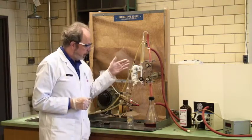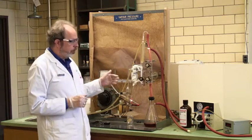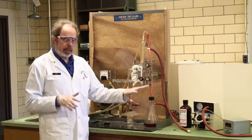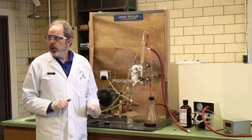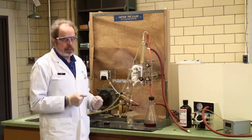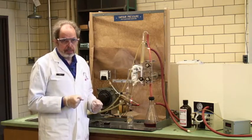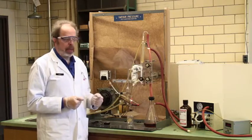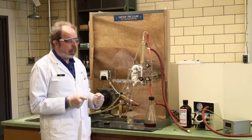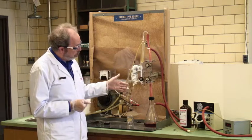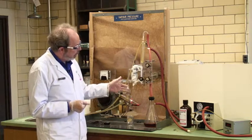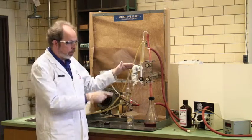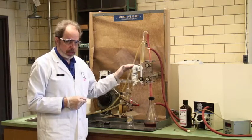This is the apparatus that we will be using. There is a pump that will take it down to various sub-atmospheric pressures. The atmosphere is about 101 kilopascals. This machine will get it down to about 30. And we will be boiling liquids in here, measuring the temperature of that boiling and measuring the pressure simultaneously.